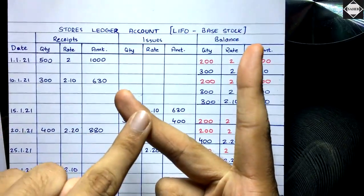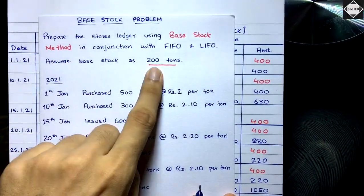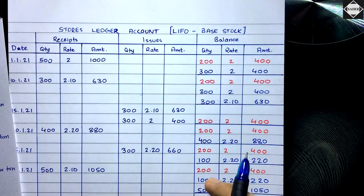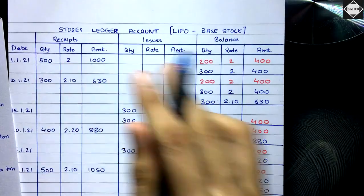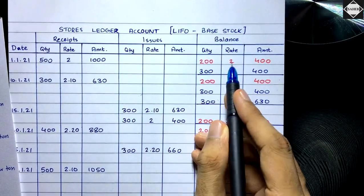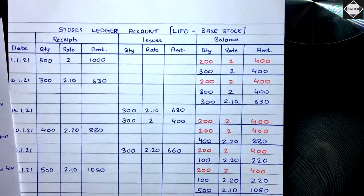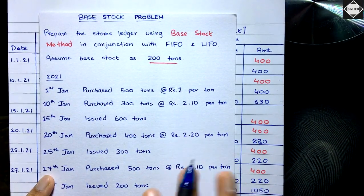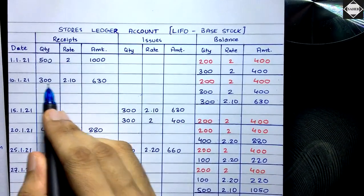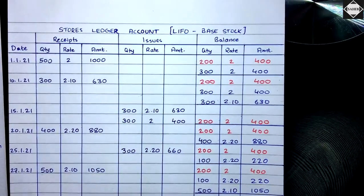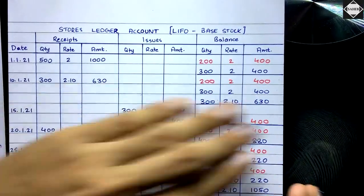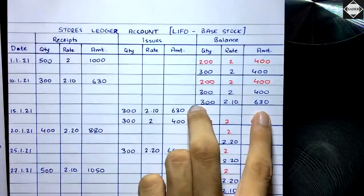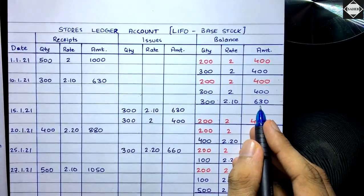This lot is converted into two lots: the base stock of 200 × ₹2 = ₹400 and the free quantity of 300 × ₹2 = ₹600. That minimum quantity is maintained till the end. On 10th January, purchased 300 more tons at ₹2.10: receipt 300 × ₹2.10 = ₹630. In the balance column, draw a line, copy existing lots below, then add the new purchase below.